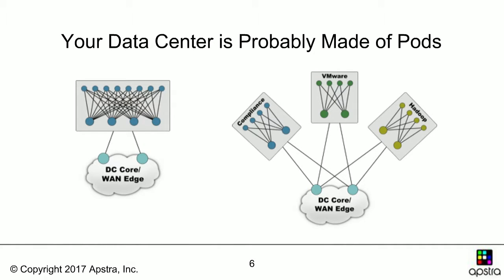These racks are used to build pods, and chances are your data center is made of pods. When we talk to customers, some think their network is very uniform, but when we get into the details, we see isolated sections — a VMware pod for some application, a pod added from an acquisition, or a section built on a different vendor. For example, a mostly Cisco data center might have an Arista pod. There's a whole variety of reasons for these little pods inside a network.